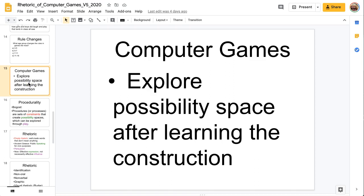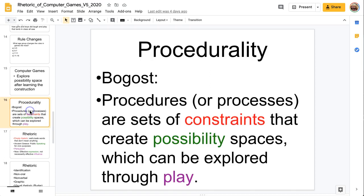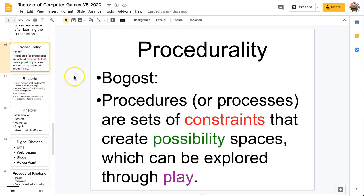Now computer games allow you to explore what's called possibility space when you're learning the game by itself. Now there is an author, his name is Ian Bogost, and he writes about video games and computer games. And he says in a very important work that procedurality, procedure, procedure is when you go from step by step by step from one thing to another. And these procedures or processes create that possibility of what you can and cannot do in the game. And that is what creates play.